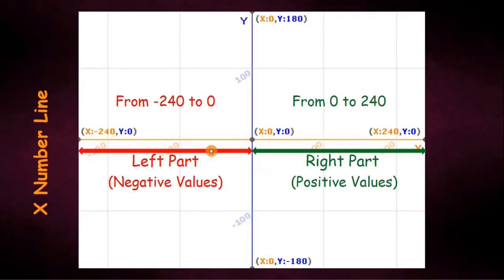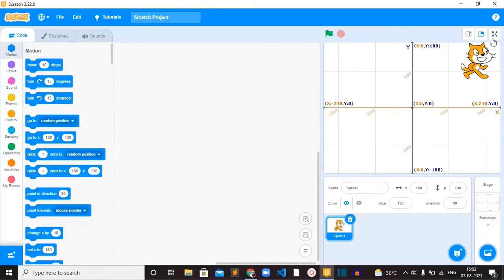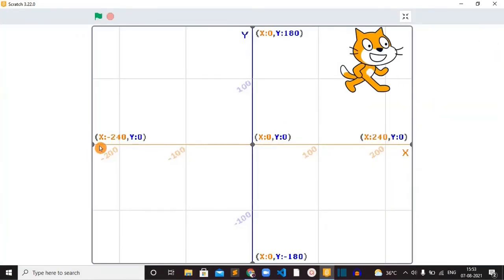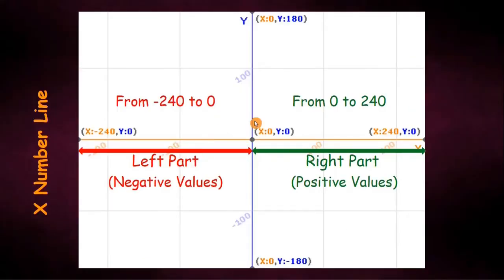So this is the x number line. You can see here we have an orange line here. Let me show you in the scratch editor. So this is the backdrop that we are using now. You can see the x line. This is the x number line orange line. So this x number line has two parts. The left part and the right part. So left part holds negative values and the right part holds positive values. You can see the ranges for the left part. So it is from negative 240 to 0 and for the right part it is from 0 to 240. So totally it is 480 pixels.